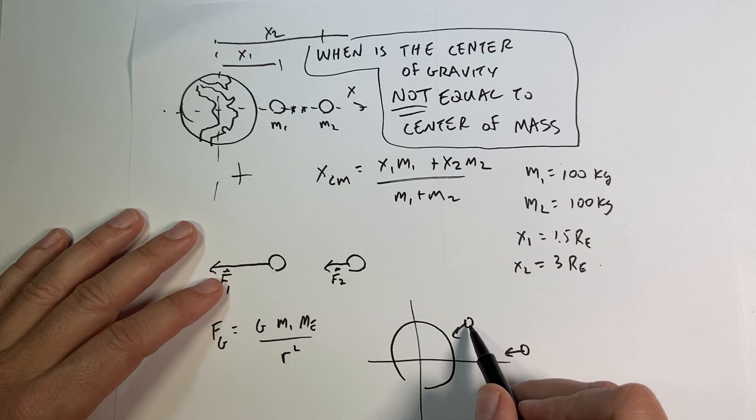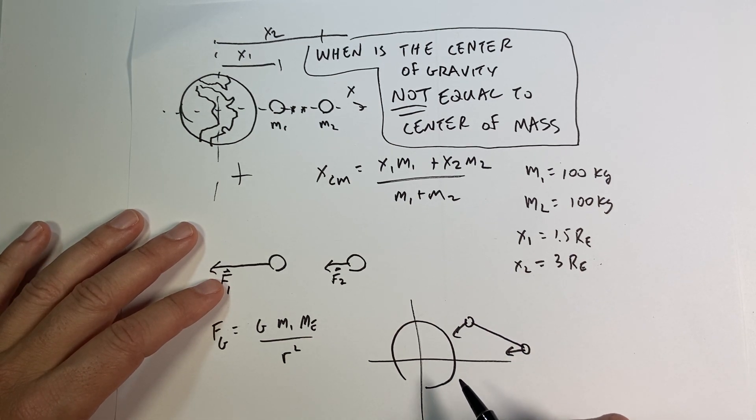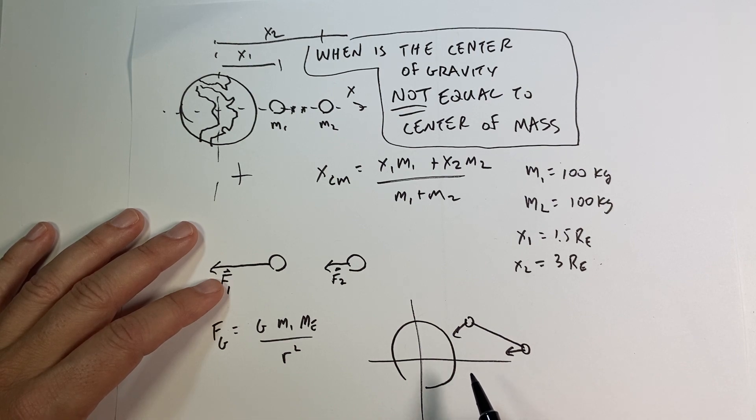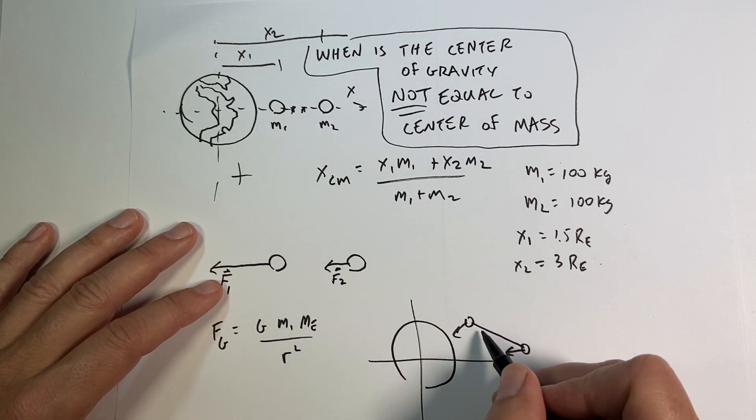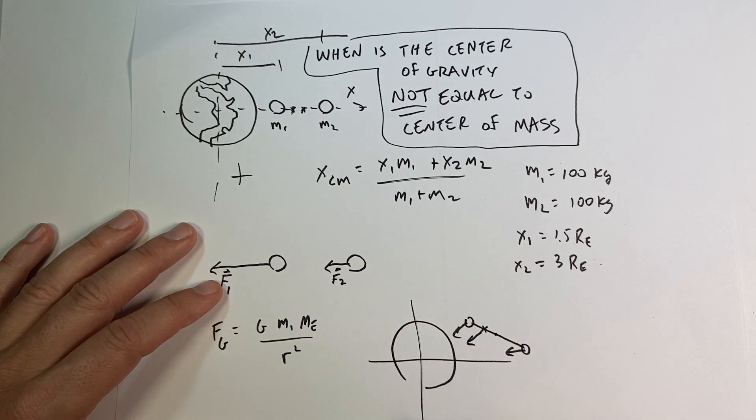So if I wanted to find one single location—let's say these are connected by a rigid massless rod, which you can get on Amazon or eBay, I'm sure you could find a massless rod—the center of mass would be right there, but the center of gravity would be over here, which is closer to this mass because it has a larger force on it. And then I could model that as one single force and find the torque and the net force on this object.